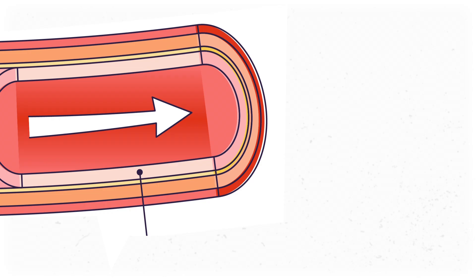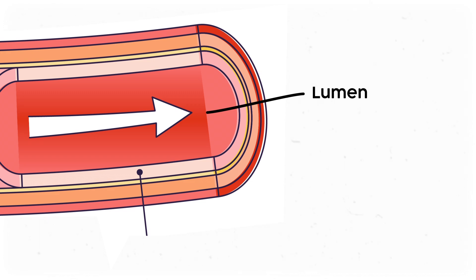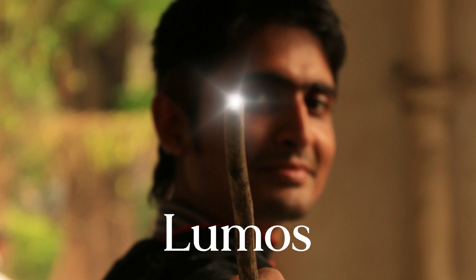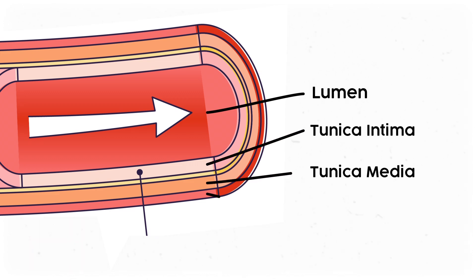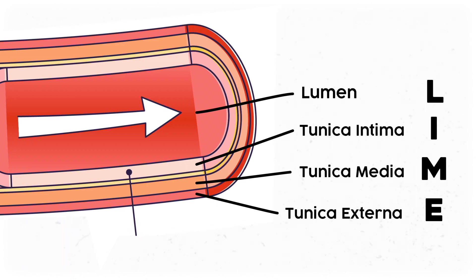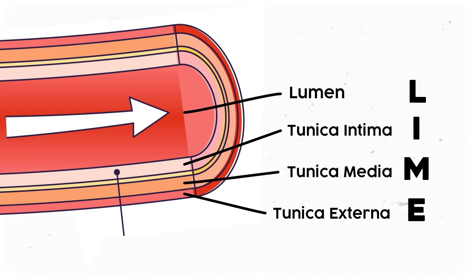I'm a big proponent of learning why things get their names. The lumen is always the empty void within a tube — lumen comes from the Latin word for light, like the Harry Potter spell lumos, so the lumen is the lightest, brightest spot on a slide. From there, there are the tunicas, or coats around it, which get the layer names of inner, middle, and outer. Alternatively, you can remember LIME for lumen, tunica intima, media, and externa — whatever works for you.